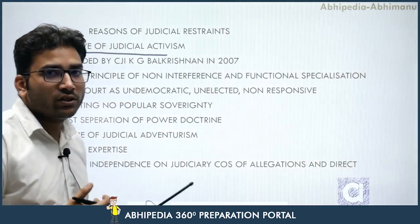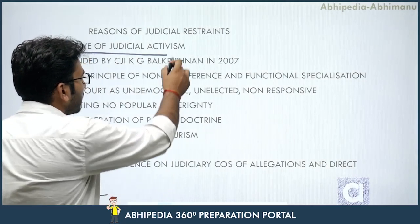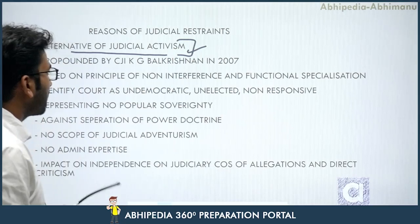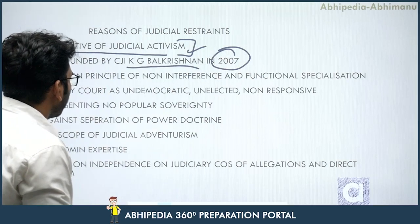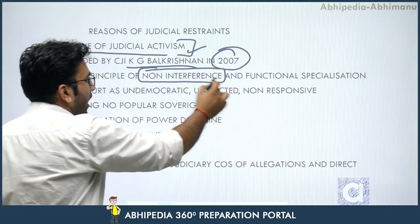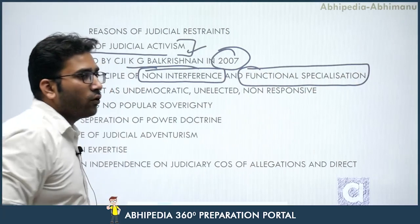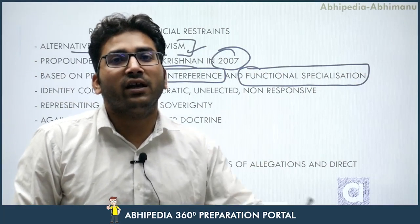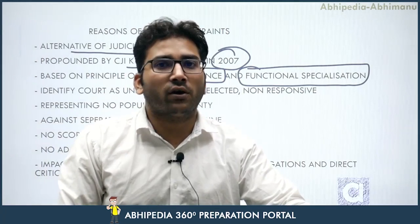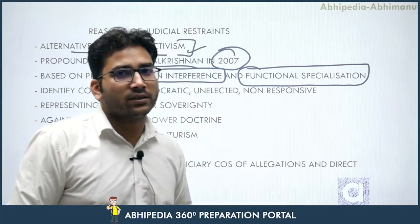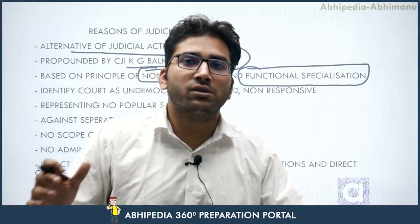Judicial restraint theory is an alternative of judicial activism, propounded by Chief Justice of India Shri K.G. Balakrishnan in the year 2007. It is based on the principles of non-interference and functional specialization. Non-interference simply means not interfering in each other's work — what work has been assigned to me, I should do only that work and not interfere in my colleague's work. Functional specialization means that I am functionally specialized in one particular field, so I should stay in that field and not try to influence someone else's domain.